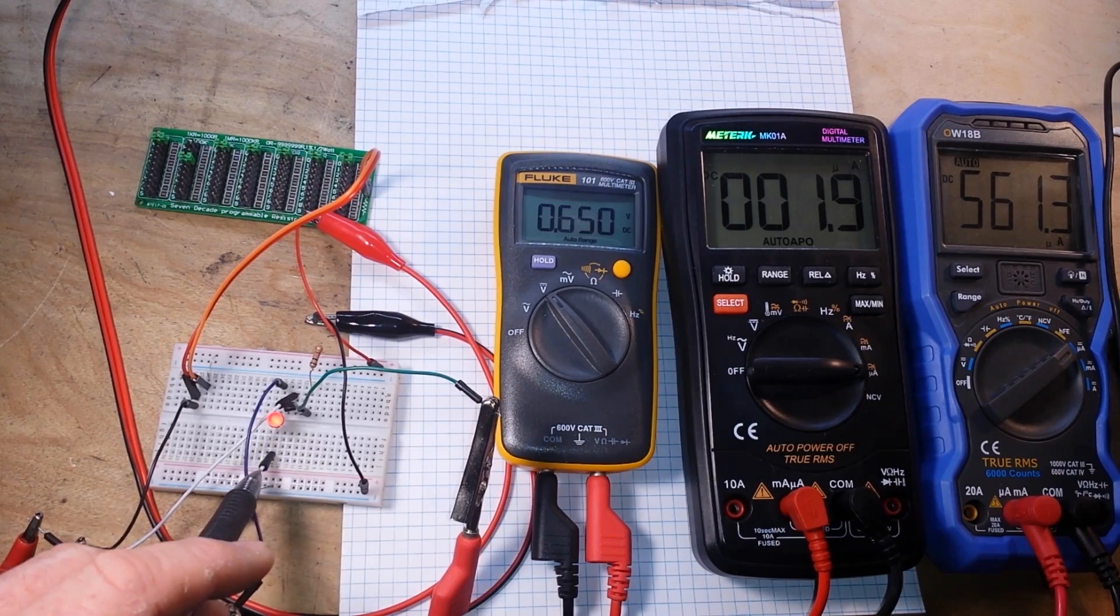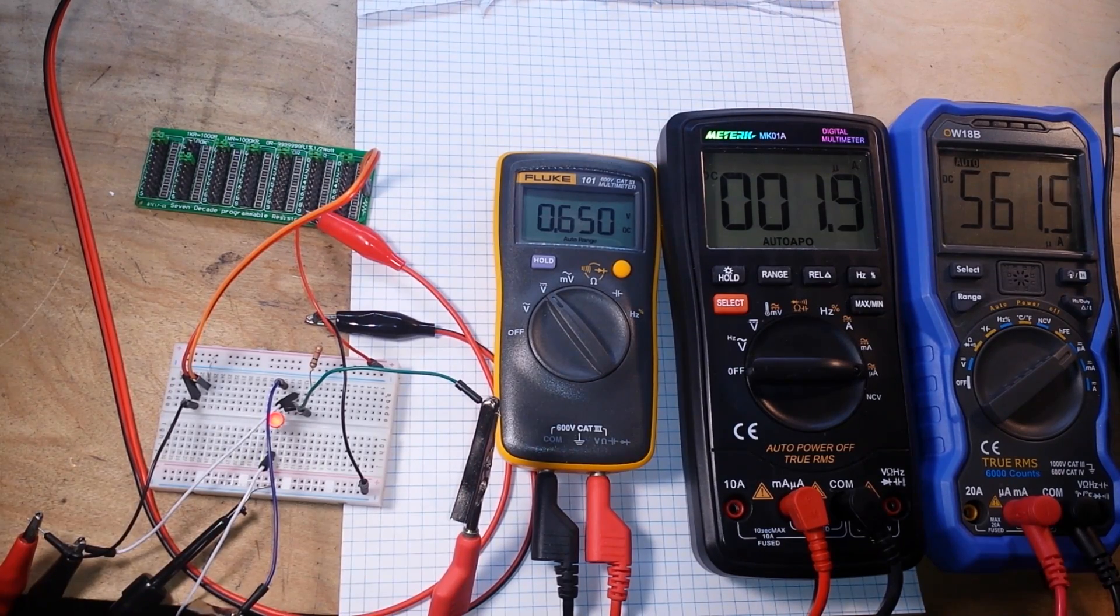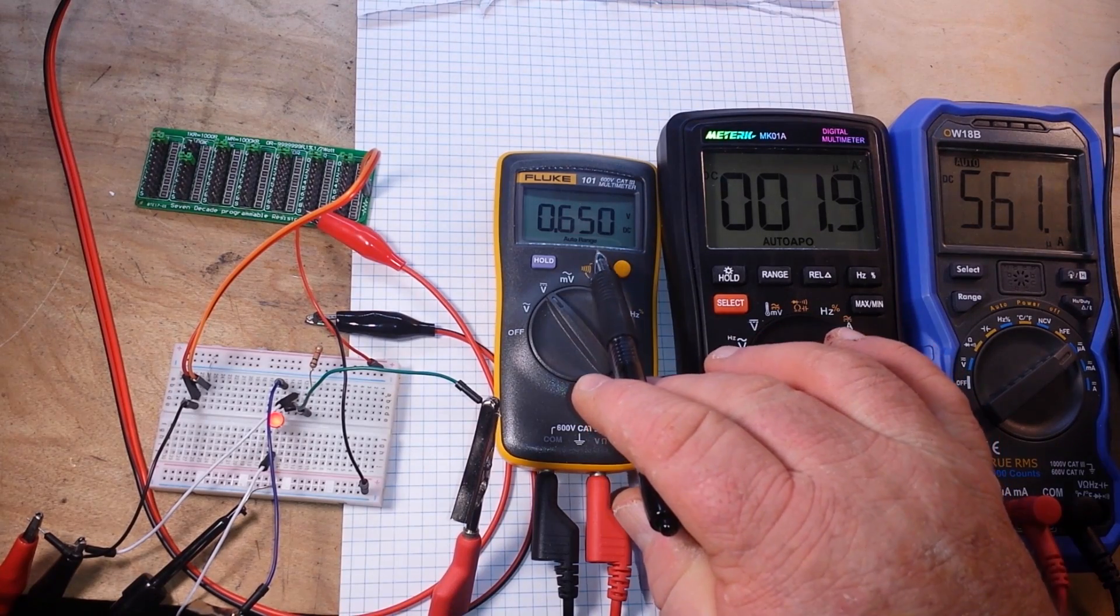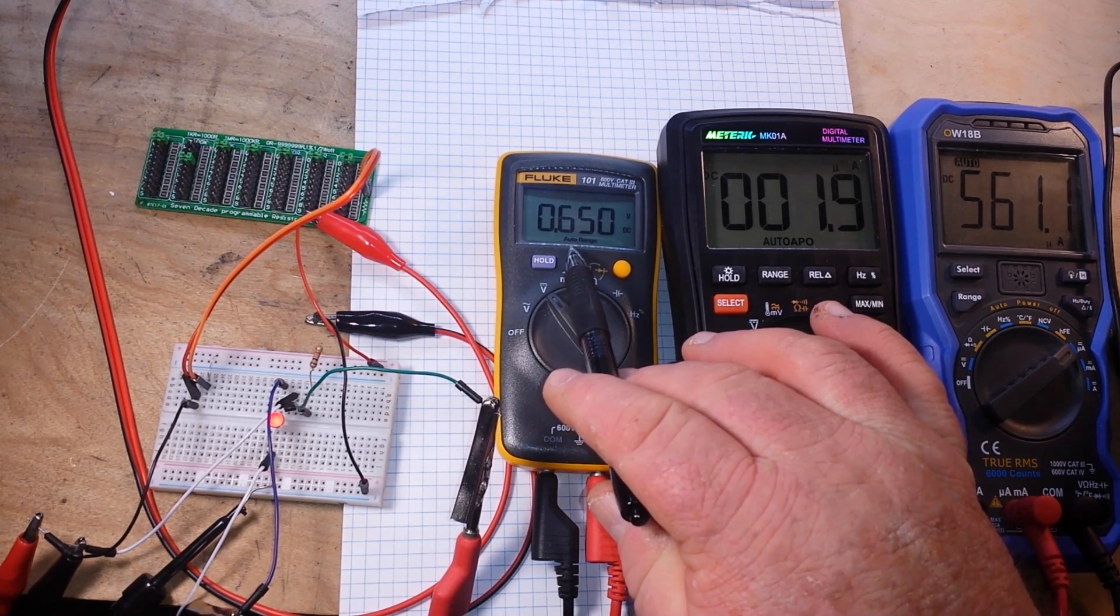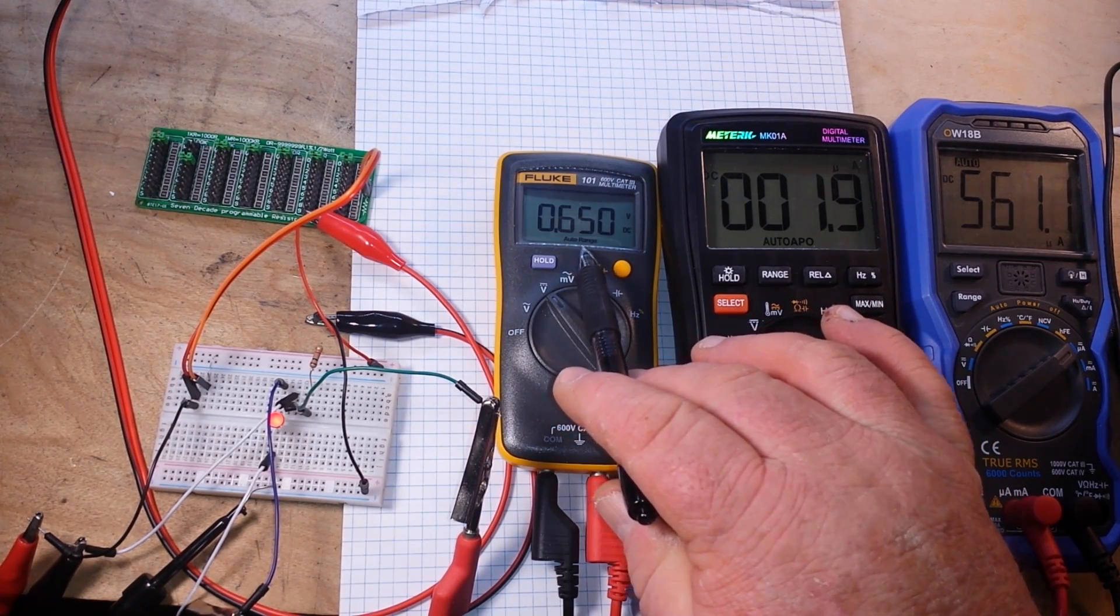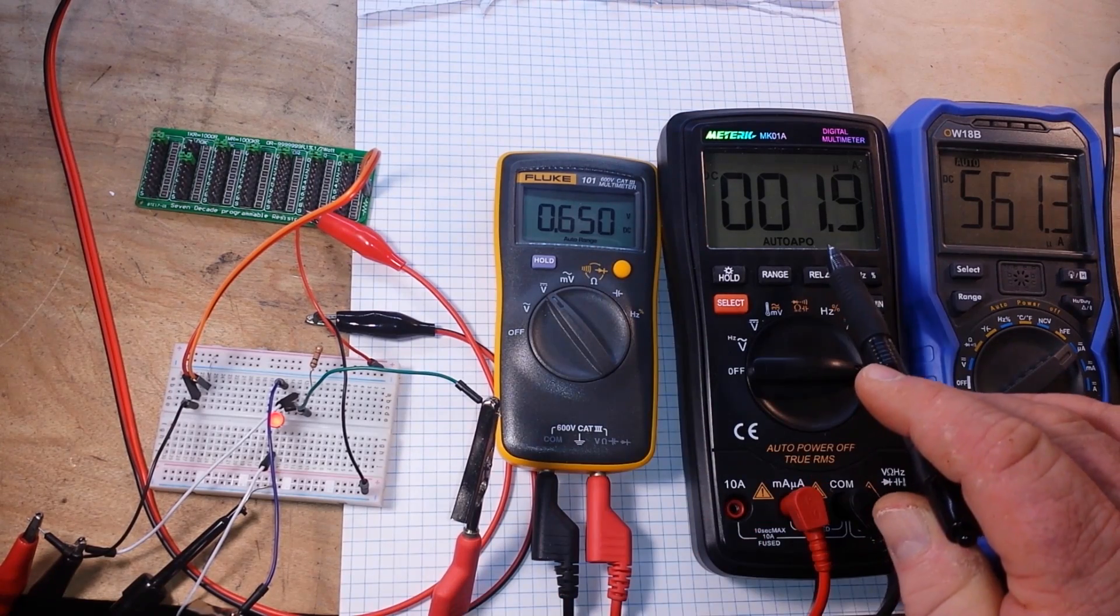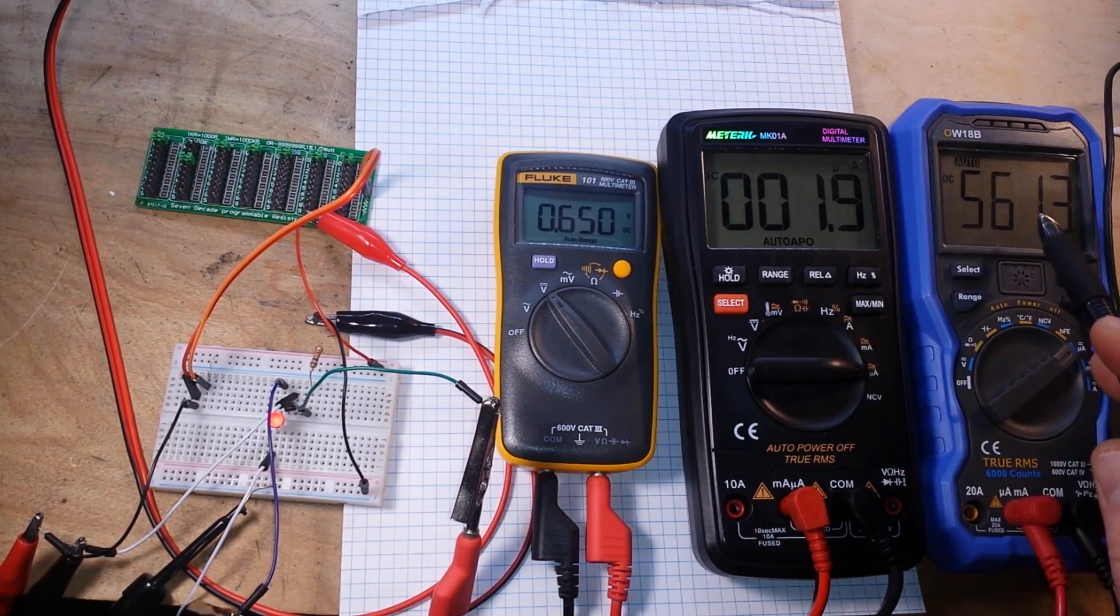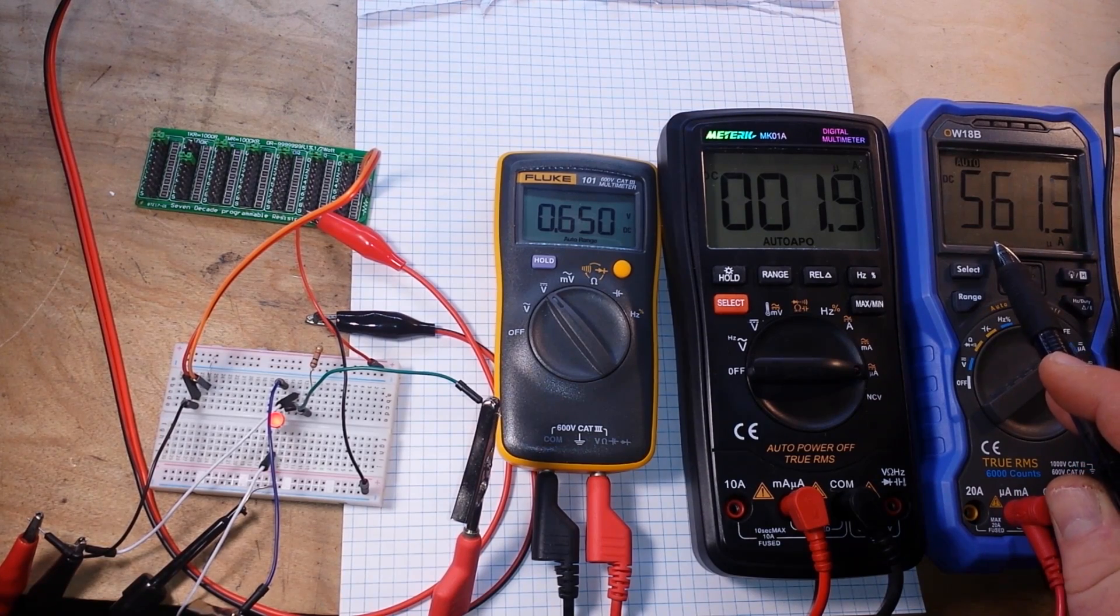Now on the Fluke here we have the collector-emitter voltage which is 0.65 volts. Here we have our base current, 1.9 microamps, and here we have our collector current which is 5.61 milliamps.